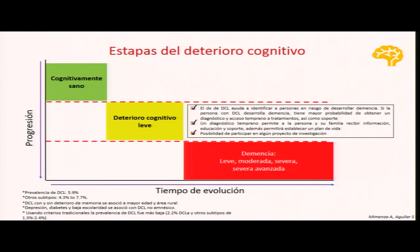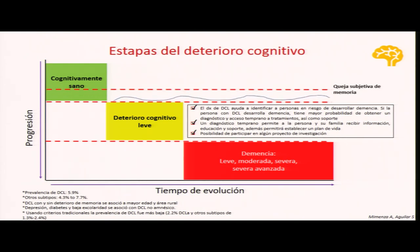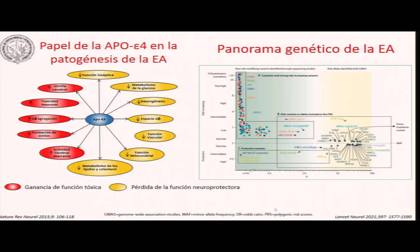El deterioro cognitivo leve es un área de oportunidad a través del cual podemos identificar a un paciente potencialmente en riesgo de progresar hacia un proceso demencial. Ningún paciente llega a una demencia sin haber estado en una etapa de deterioro cognitivo leve, y este es el área de oportunidad donde podemos incidir para intentar retrasar la progresión. En México, aproximadamente entre el 6 y el 8 por ciento de la población mayor de 60 años padece deterioro cognitivo leve.